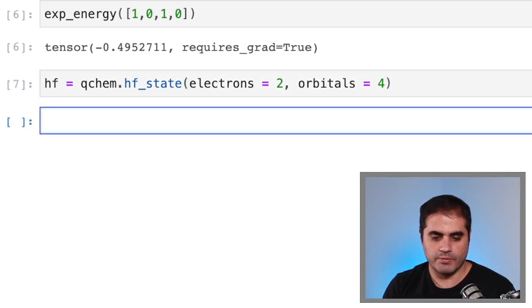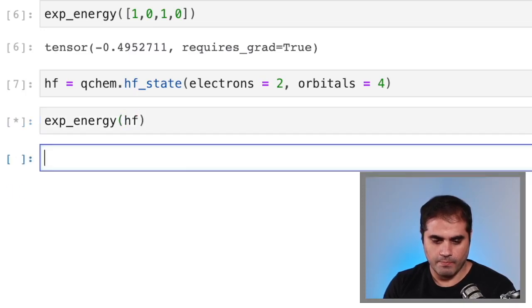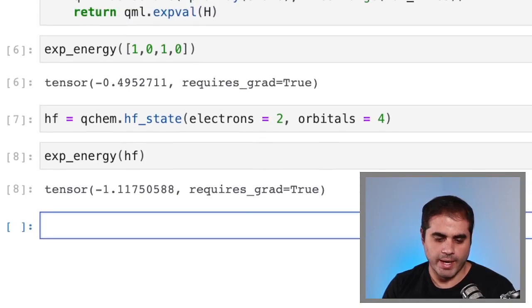Enter, we find our Hartree-Fock state. So now if we calculate the expectation value of the energy for this Hartree-Fock state, we get an energy that is lower than the state that we had before.